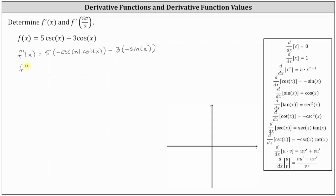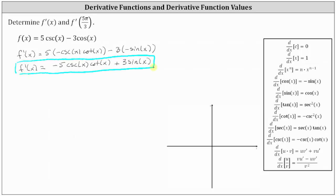Simplifying, we have f prime of x equals negative five cosecant x cotangent x plus three sine x. Now that we have the derivative function, we can determine f prime of five pi divided by three. So f prime of five pi divided by three is equal to negative five times cosecant of five pi divided by three times cotangent of five pi divided by three, plus three times the sine of five pi divided by three.